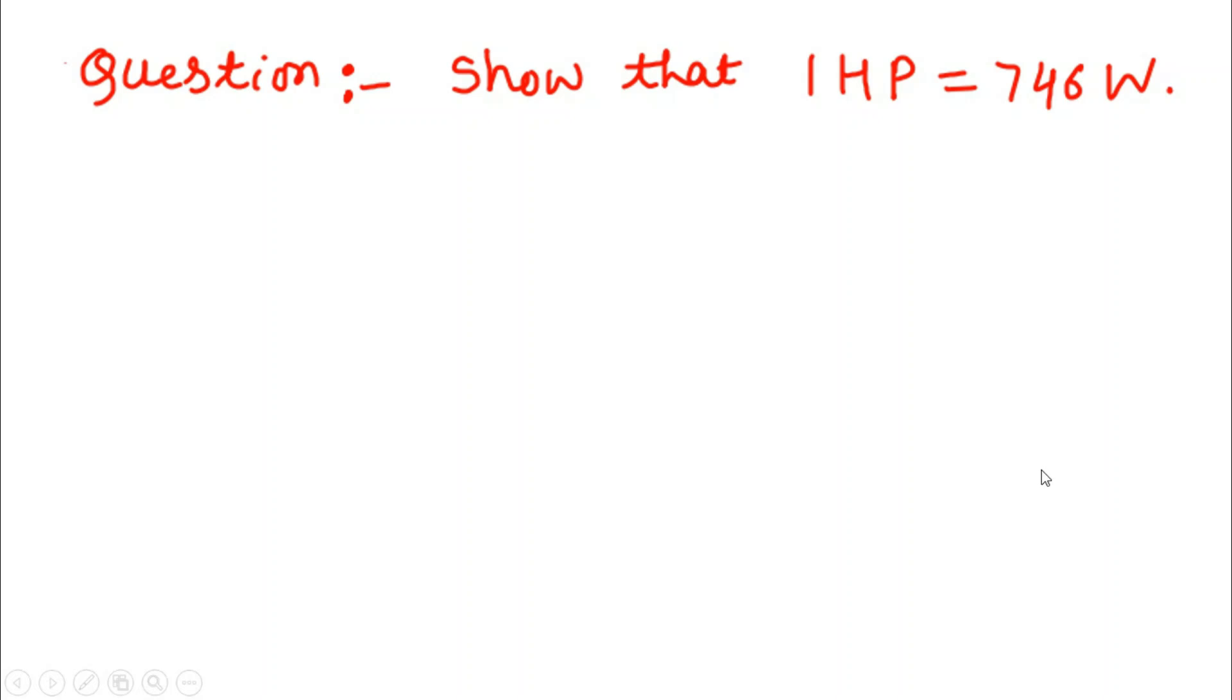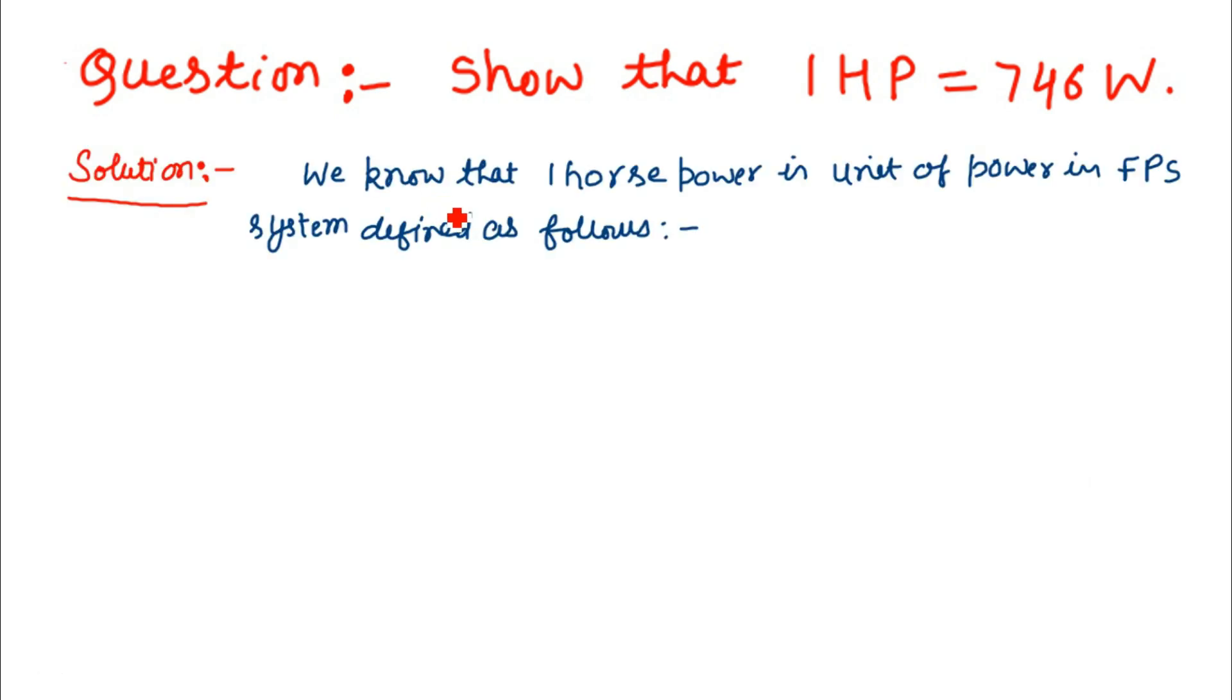Today we are going to prove that 1 horsepower equals 746 watts. For this, we have to remember that horsepower is the unit of power in the FPS system—foot, pound, and second system.